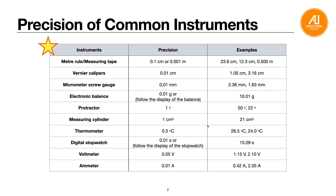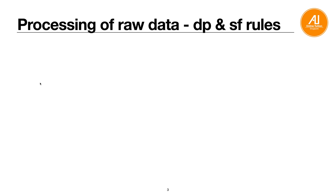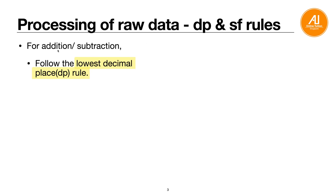Make sure you memorize this table — it's very important. Next, how you process your raw data: you follow the decimal place (DP) or significant figures (SF) rule. If your teacher hasn't mentioned this, listen carefully. For addition and subtraction, you must follow the lowest decimal place rule.